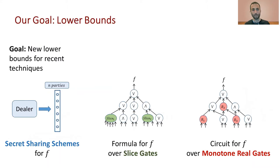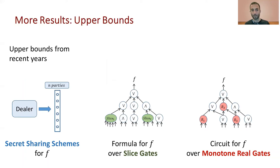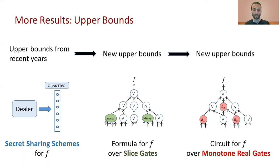Our goal is to obtain new lower bounds for recent techniques in secret sharing. In the past few years there have been breakthroughs, and we want to show there is a limit on how much you can improve secret sharing schemes without introducing more new ideas. We do this by showing lower bounds for monotone real circuits that also apply to formulas over slice gates and then to secret sharing with recent techniques. We'll show transformations and on the way obtain new upper bounds — taking recent upper bounds for secret sharing and showing they also apply to formulas over slices, yielding the first non-trivial upper bounds for monotone real circuits as well.